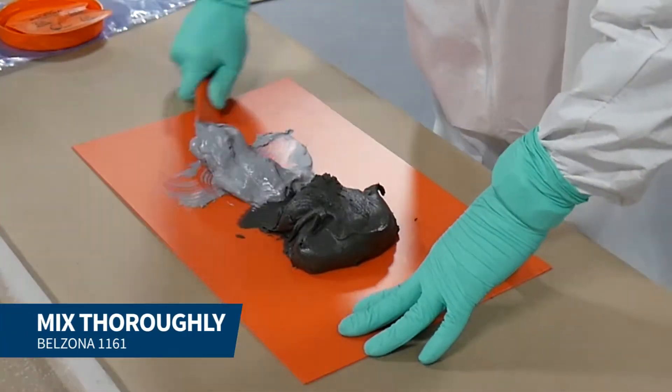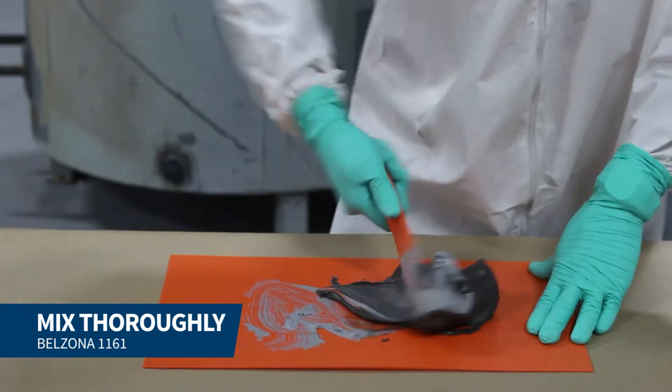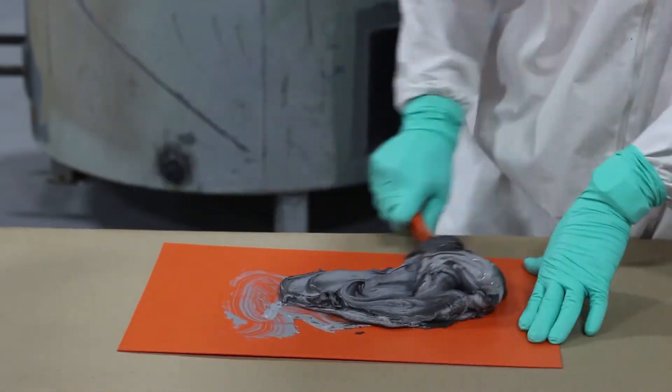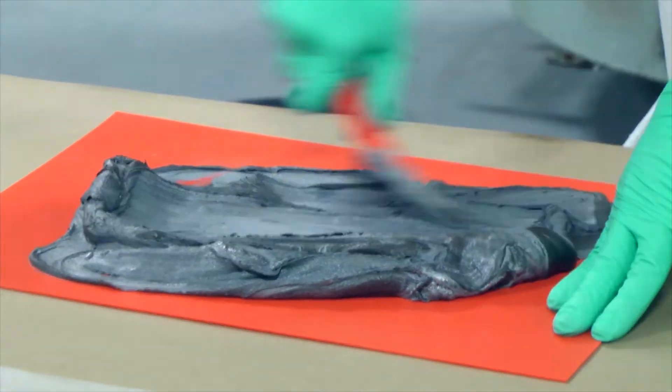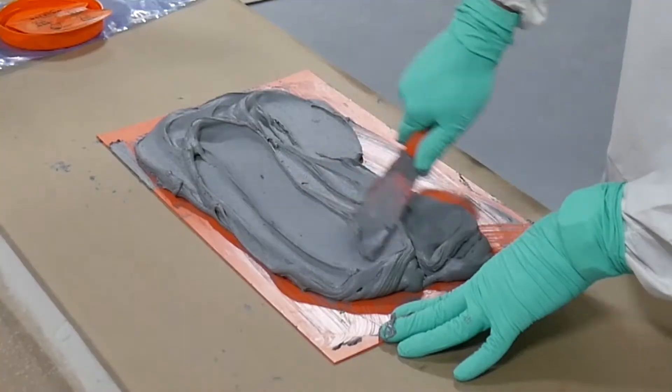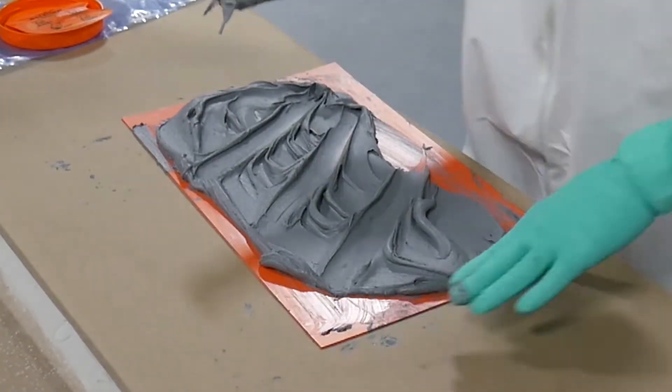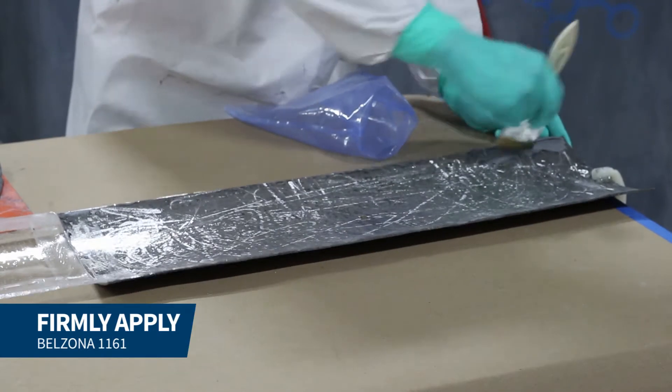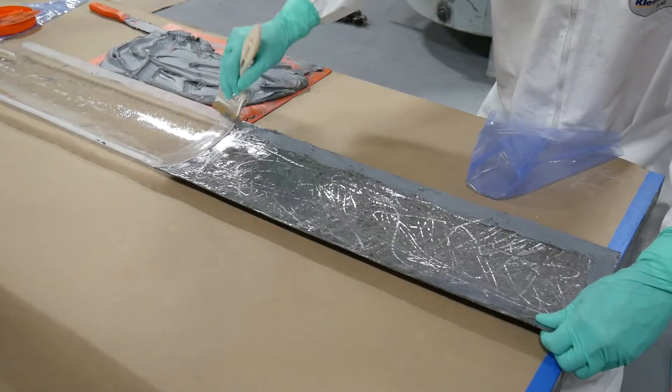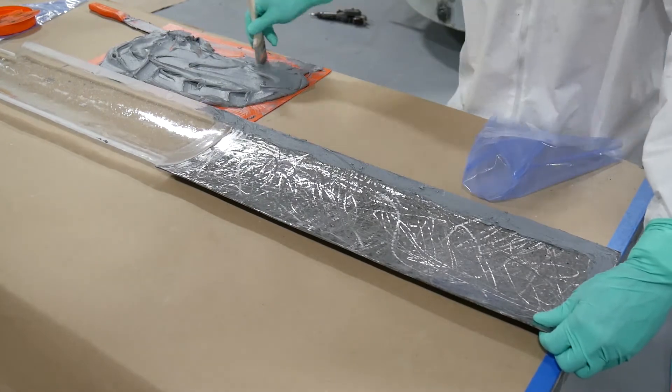We mix Belzona 1161 until a uniform material was achieved. A layer of Belzona 1161 was firmly applied to the edges with a stiff bristled brush to ensure full contact with the surface.